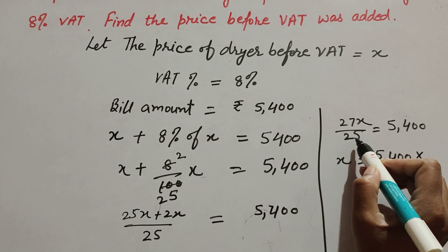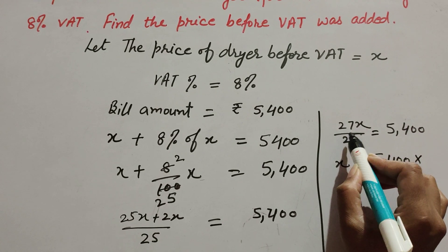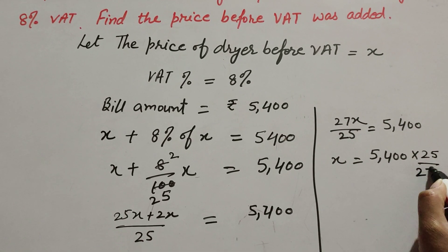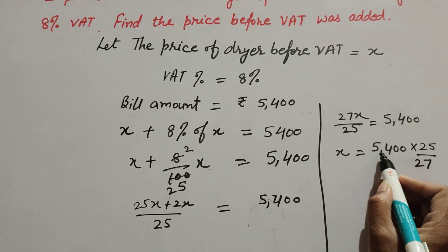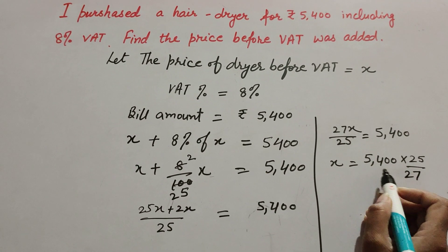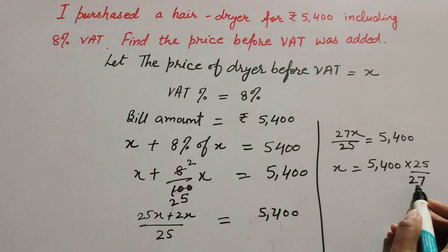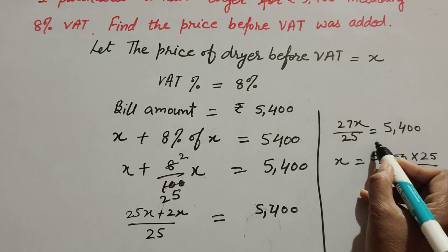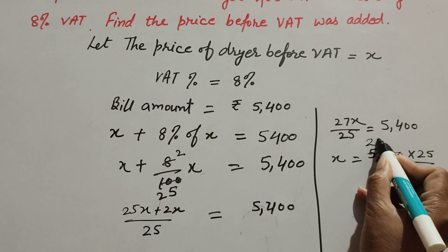Now we calculate 5,400 divided by 27. Both are divisible by 27, so 5,400 ÷ 27 = 200.